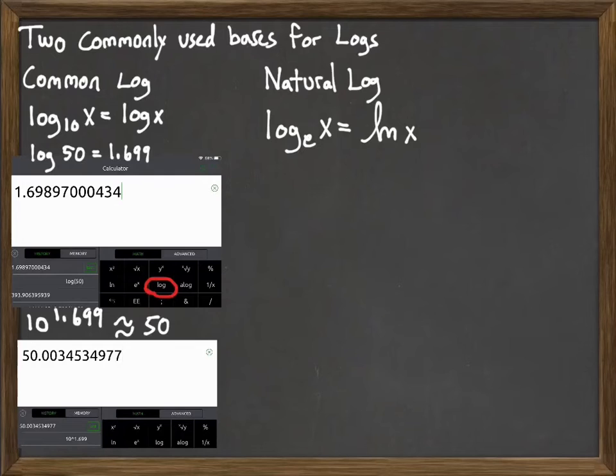This is also built into your calculator. If we wanted to do the natural log of 10—in other words, what power do we raise e to get 10—the answer is roughly 2.303.